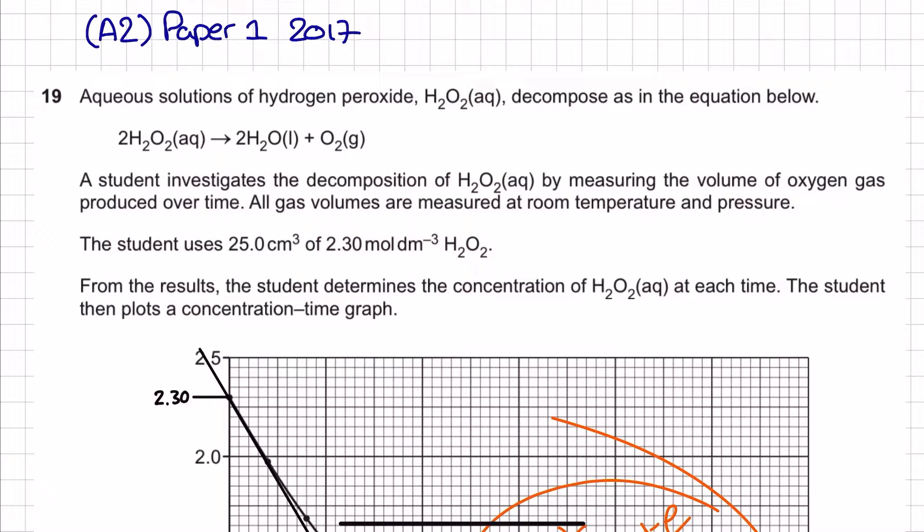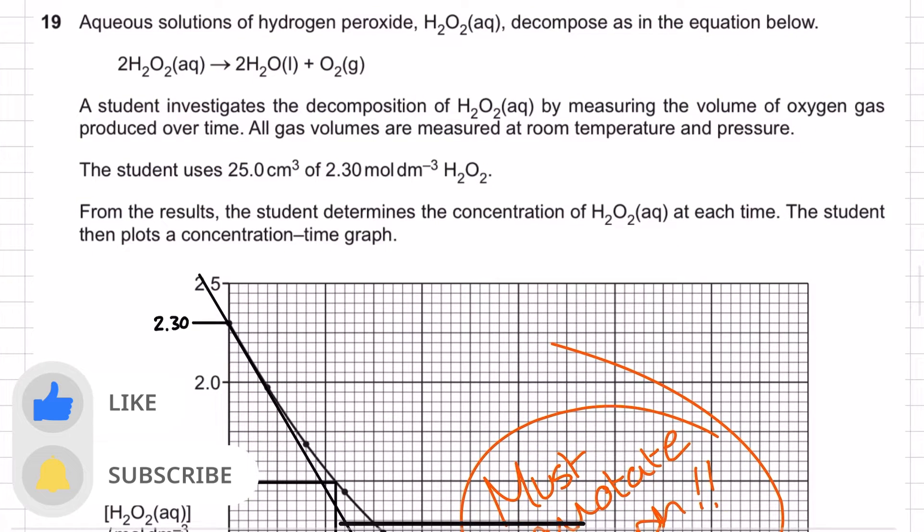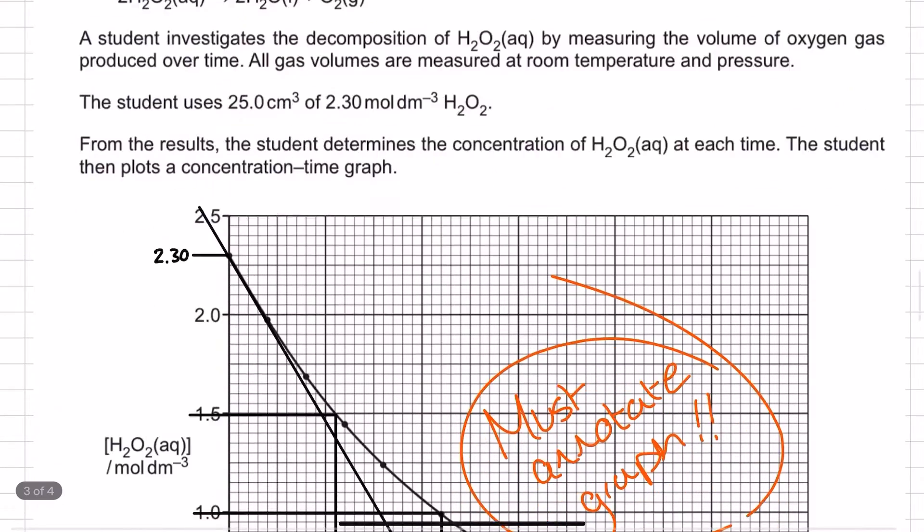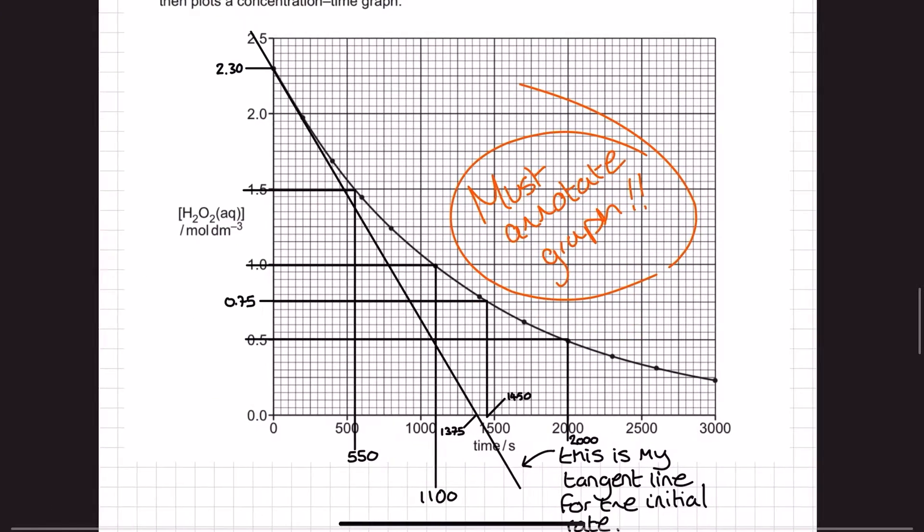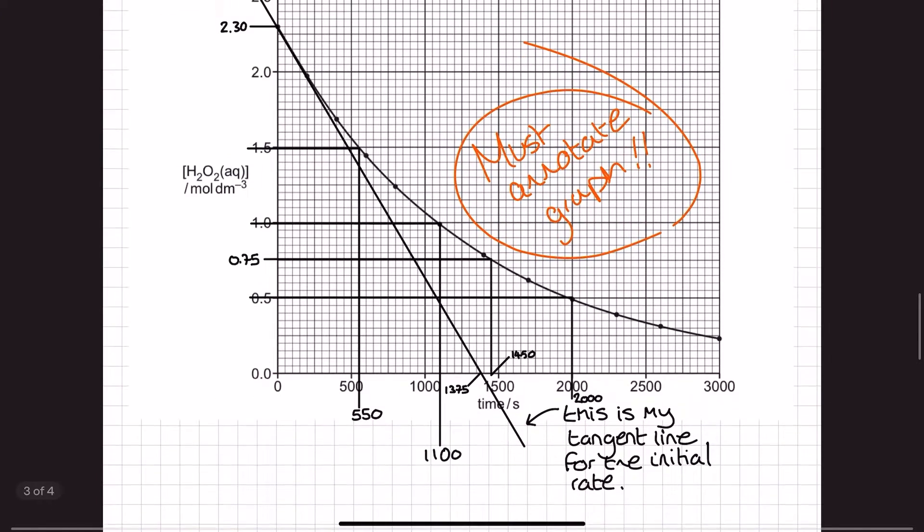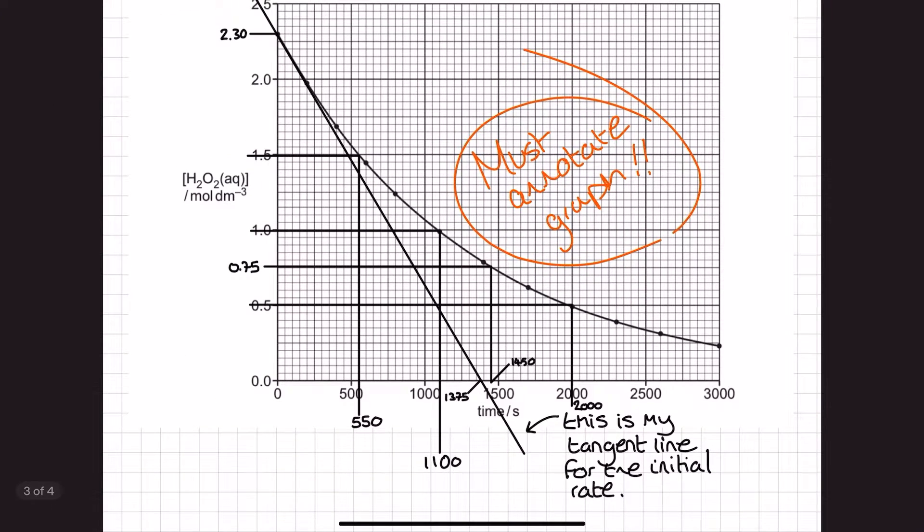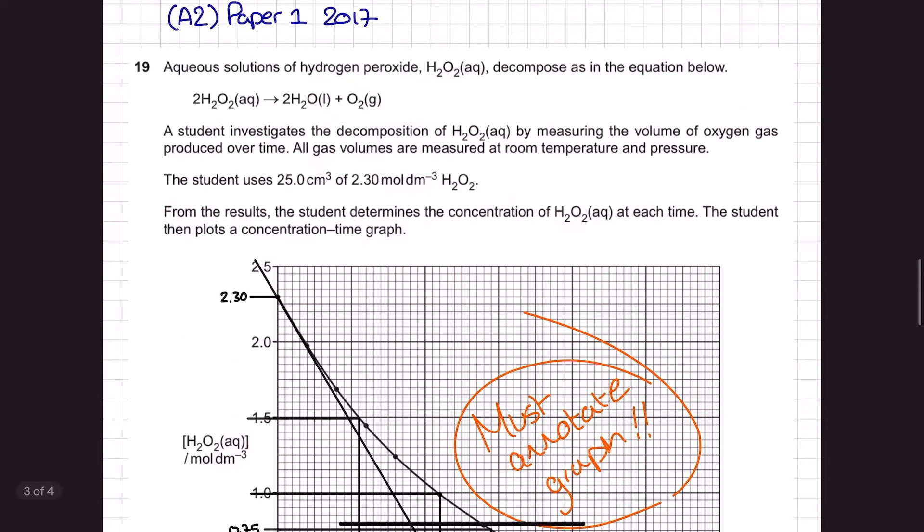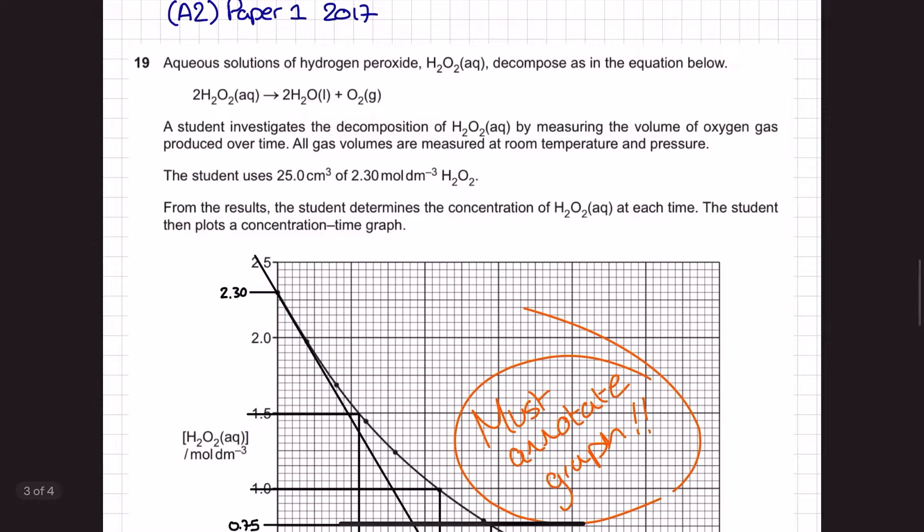Hi everyone, the level of response question I'm going to go through here is from the OCR specification in A-level chemistry paper 1 exam in 2017, and this was question 19 in the paper. This is a rate of reaction level of response question, and it's very heavy on the graph annotations. If you want to check out the official mark scheme along with this, just to repeat, it is the paper 1 from 2017 on the OCR specification.